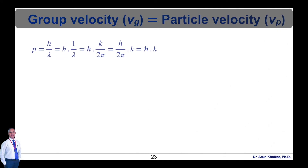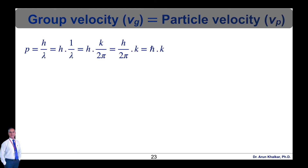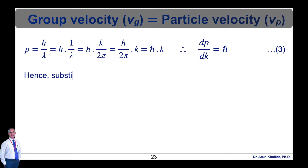Using the de Broglie wave equation λ = h/p, we can write p = h/λ = h·(1/λ) = h·(k/2π) = ℏk, where h/2π is h-bar. Therefore, dp/dk = ℏ. This is equation number 3.